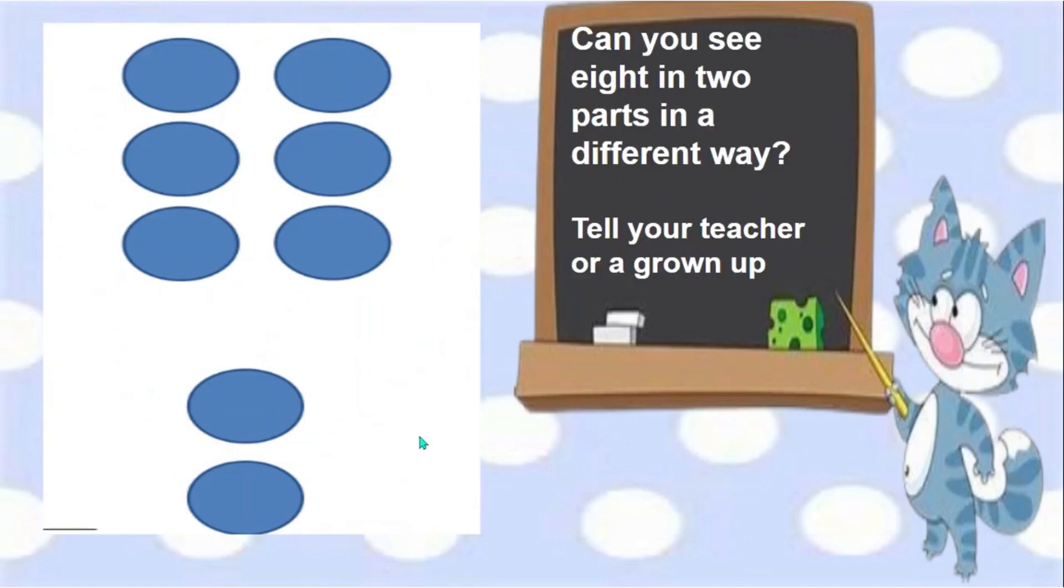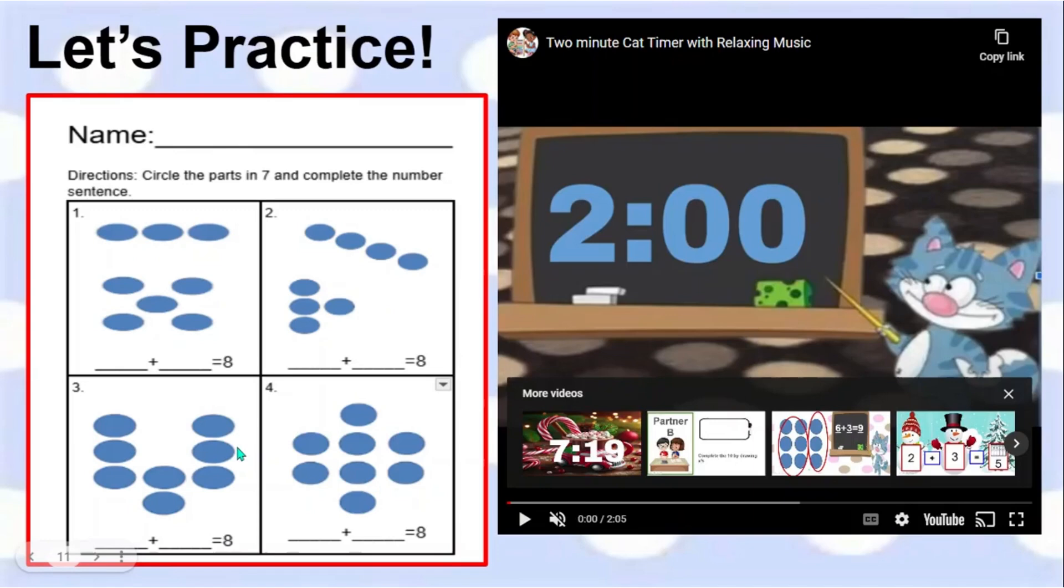Did you see something different? Tell your teacher or grown-up. Now it's time for you to find the hidden parts of eight. Circle the two parts on the cards and write in the missing numbers in the number sentence. You have two minutes.